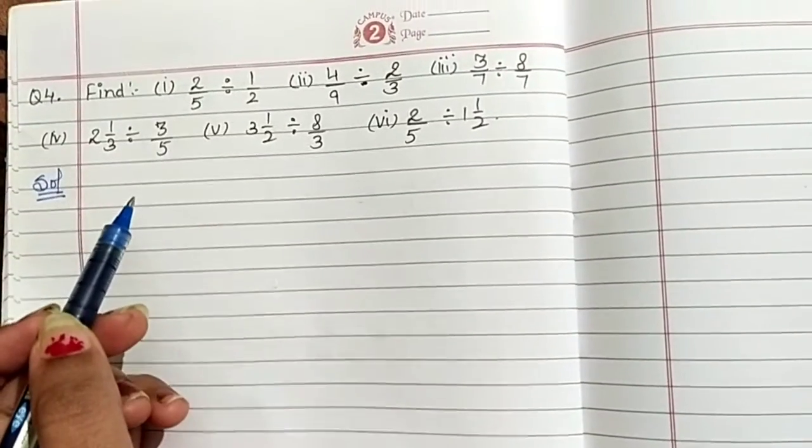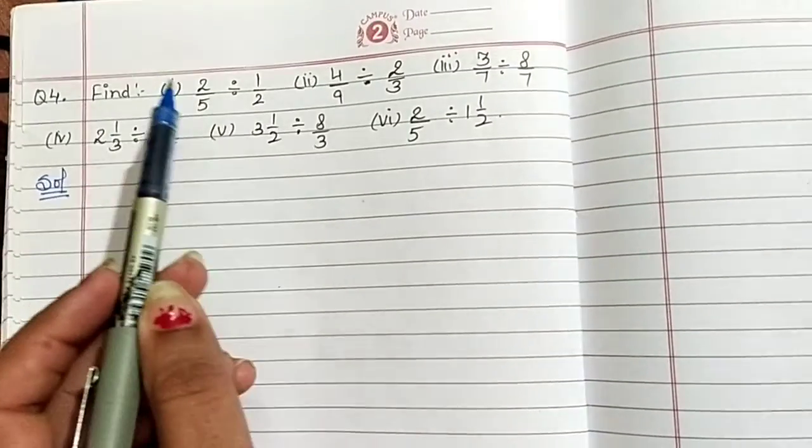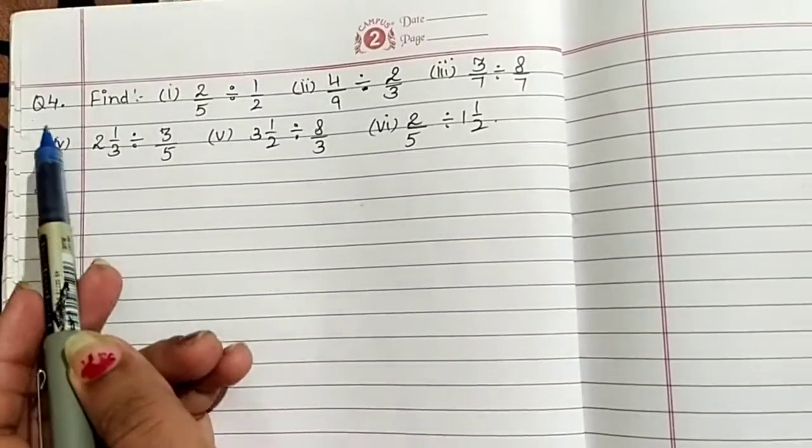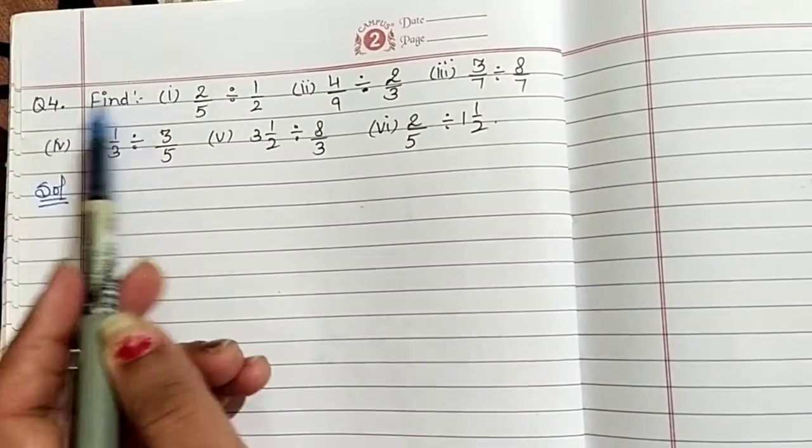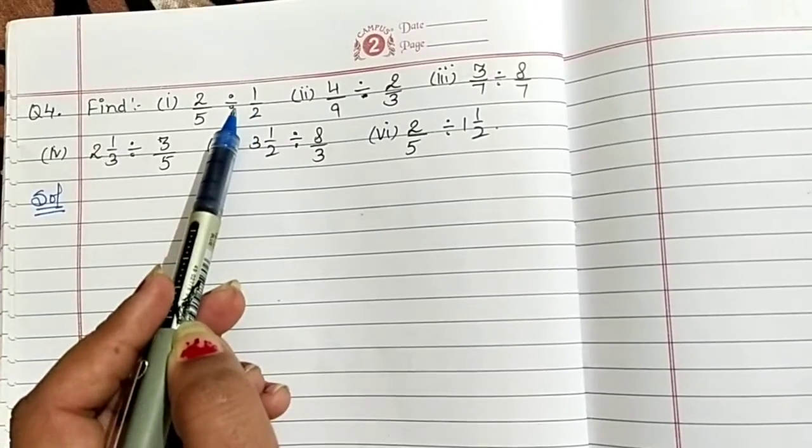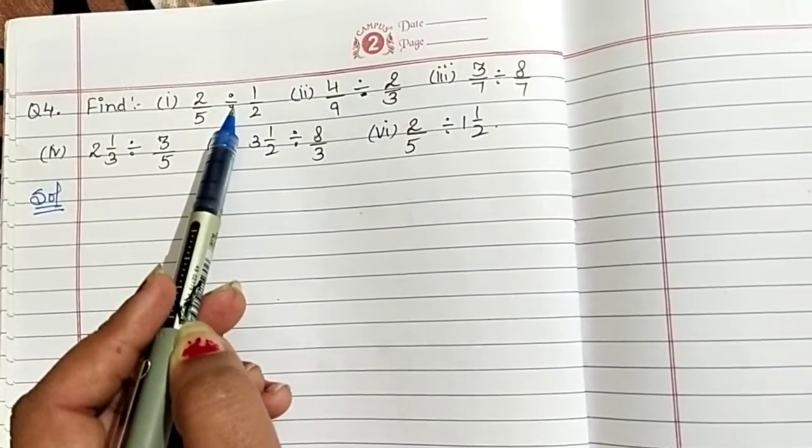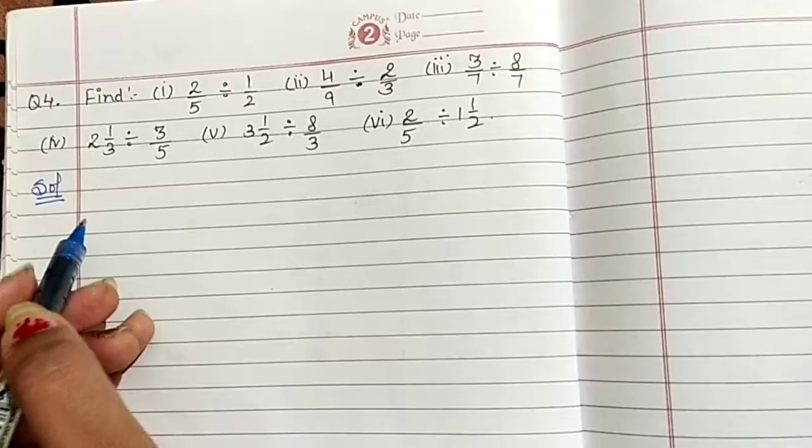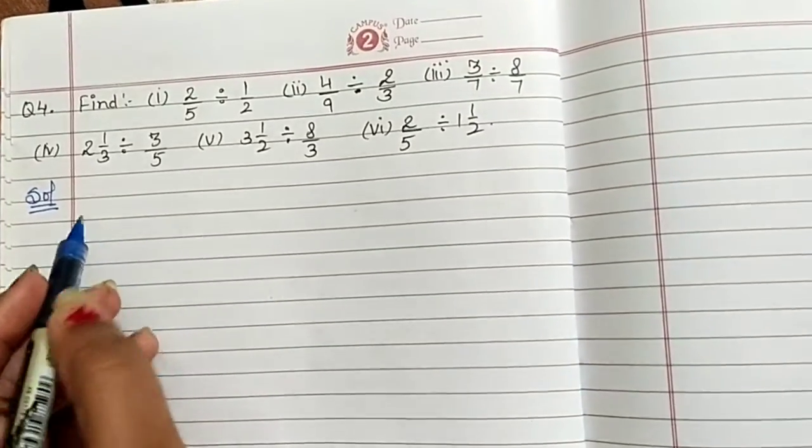Students, now continue exercise 2.4. This is the last question of this exercise. Find here two fractions given and we have to find the division of this, similar as second and third question.